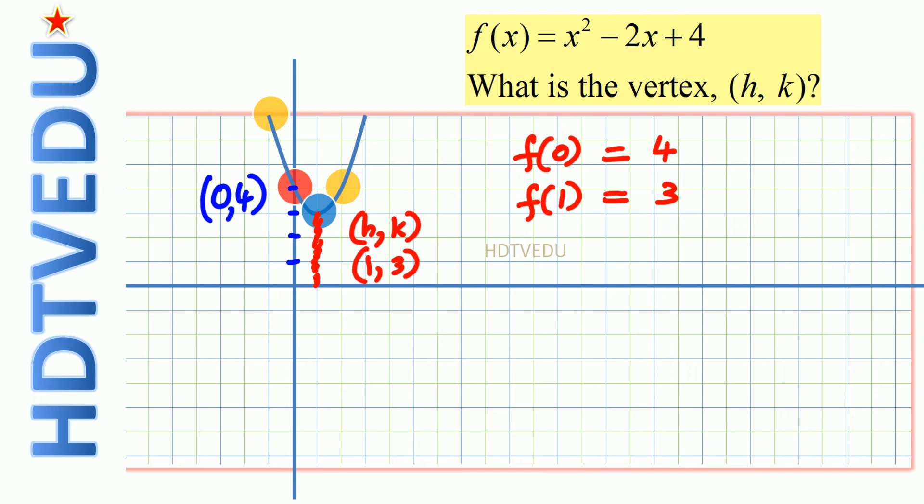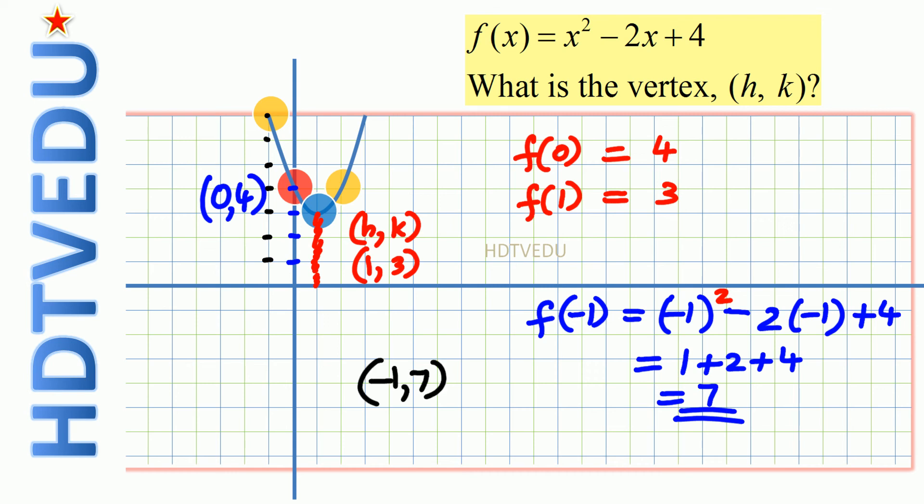When we substitute x equals negative 1, what happens? So f of negative 1, what is that? Plus 4. And this is 1 plus 2 plus 4, and that is 7. So when x equals negative 1, we get 7. So negative 1, 7 is a point on our graph.